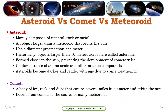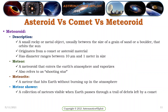A comet is a body of ice, rock, and dust that can be several miles in diameter and orbits the sun. Debris from a comet is the source of many meteoroids. A meteoroid is a small rocky or metal object, usually between the size of a grain of sand and a boulder, that orbits the sun, originates from comet or asteroid material, and has a diameter ranging between 10 micrometers and 1 meter. A meteoroid that enters Earth's atmosphere and vaporizes is referred to as a meteor, also called a shooting star. A meteor that reaches Earth without burning up in the atmosphere is referred to as a meteorite. A collection of meteors, visible when Earth passes through a trail of debris left by a comet, is referred to as a meteor shower.